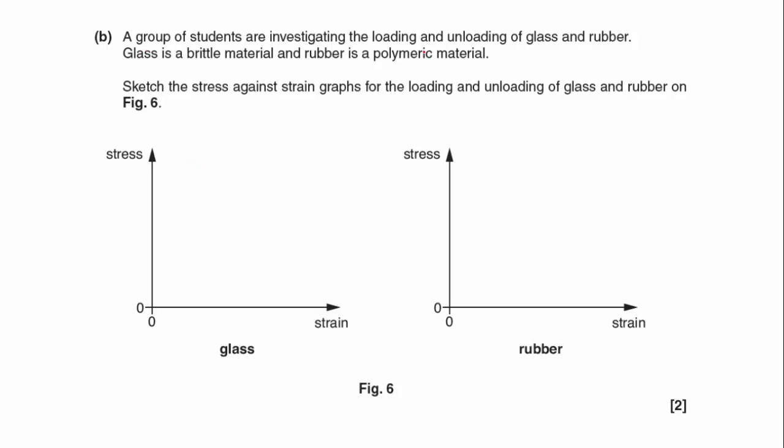A group of students are investigating the loading and unloading of glass and rubber. Glass is a brittle material and rubber is a polymeric material. Sketch the stress-strain graphs for the loading and unloading of glass and rubber on figure six.